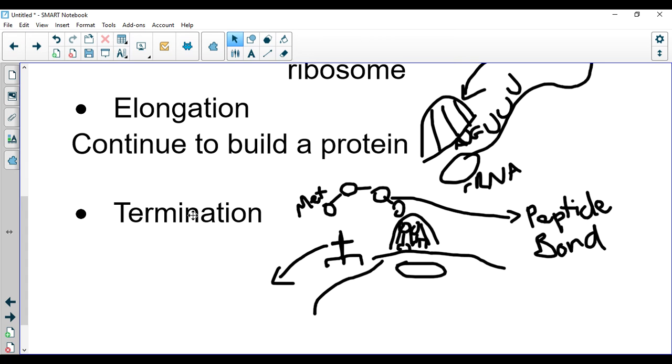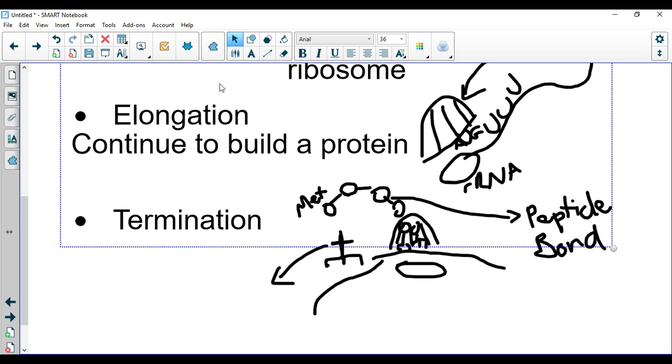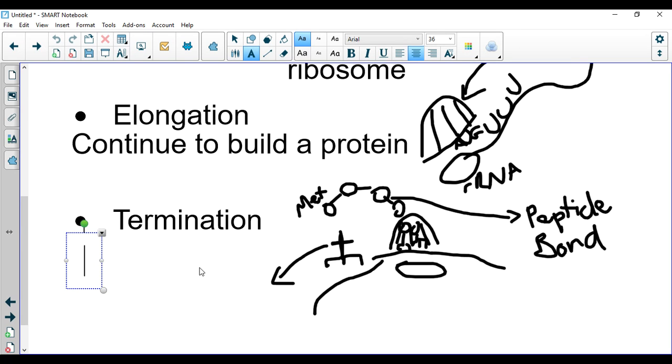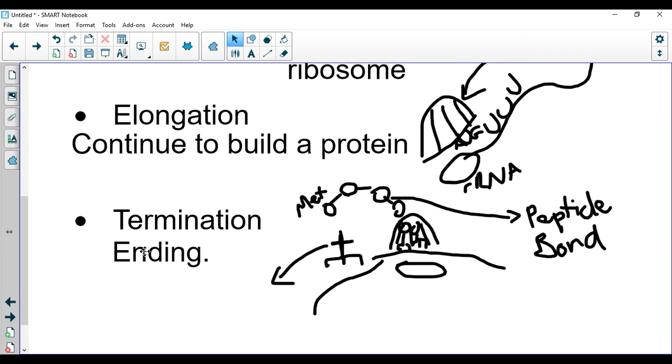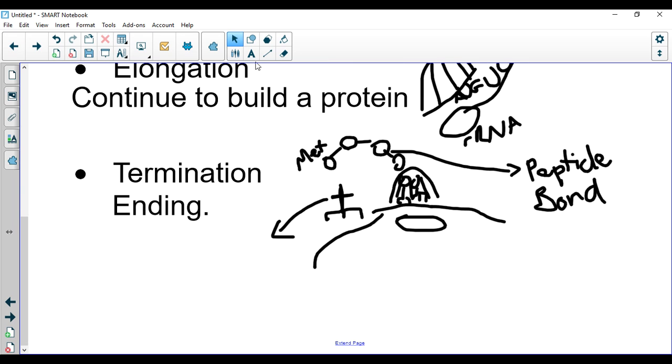The last process is termination. As you would assume, this is the ending. What happens here is we end up hitting one of three stop codons. In just a minute, I'm going to talk through the codon chart and I'll show you the three different stop codons. So what happens is we will continue to build that protein until we hit a stop codon on that mRNA. There are three. Here is one right here: UGA. That is a stop codon.